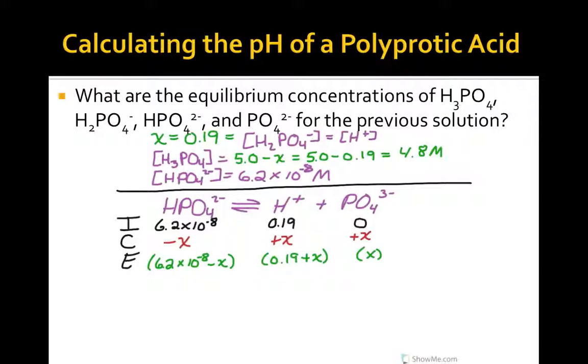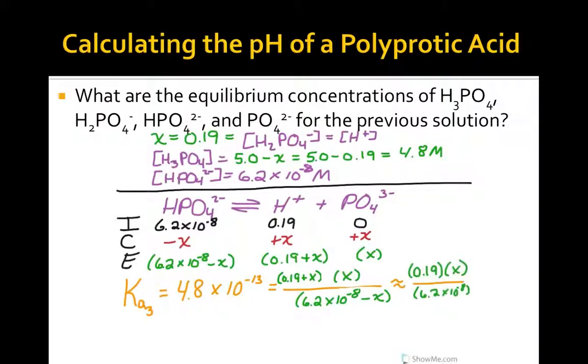Our equilibrium concentrations in terms of x are here in green. In yellow, we have the equilibrium expression for Ka3. We substitute the concentrations at equilibrium in terms of x. Using an approximation, we can quickly solve for x. That gives us the phosphate ion concentration, which is 1.6 times 10 to the negative 19th molar.